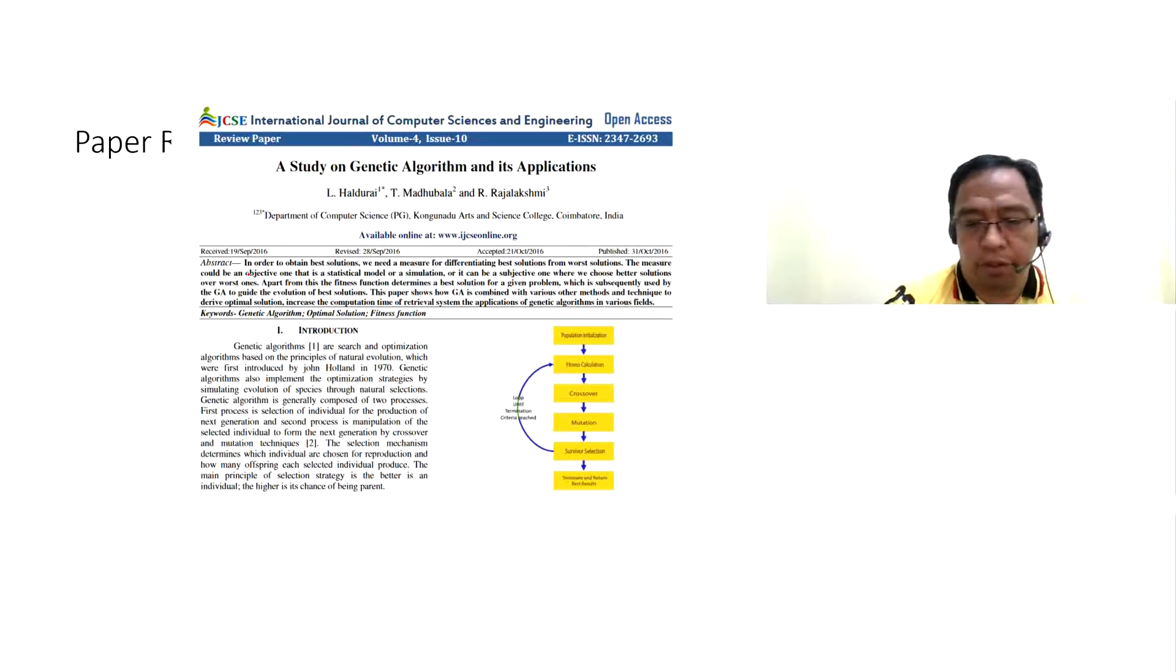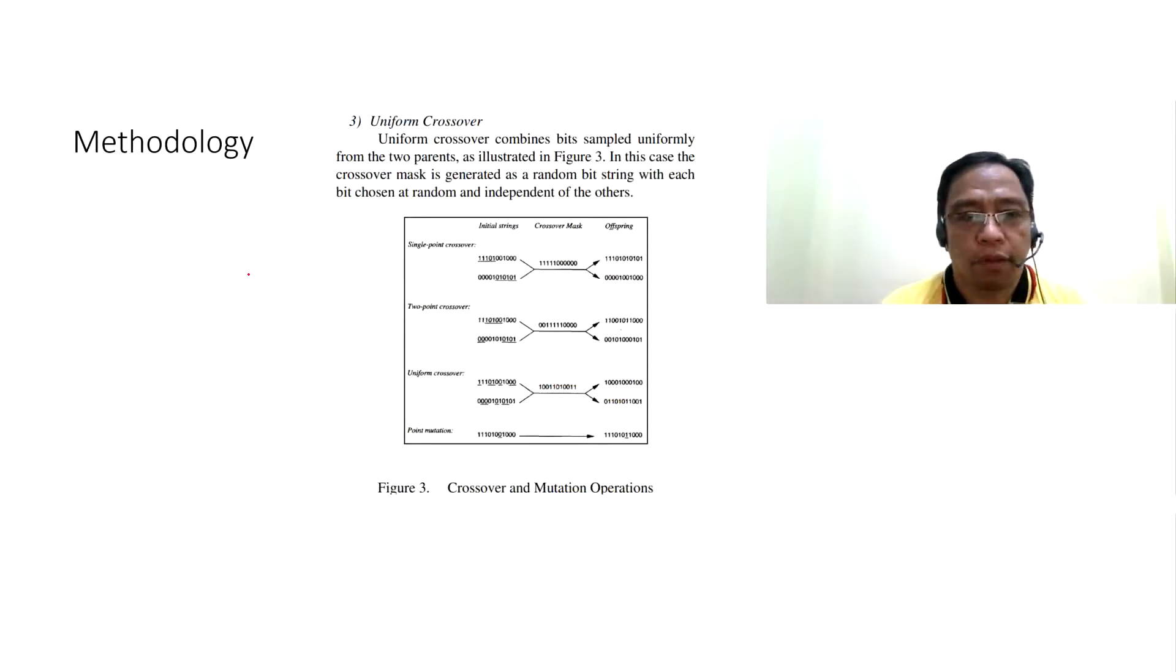For the methodology, a uniform crossover combines bits sampled uniformly from the two parents as illustrated in this figure or figure three. In this case, the crossover must generate a random bit string with each bit chosen at random and independent of the others. Two chromosomes randomly combined for the offspring or crossover. And then, this is the offspring or the child. Two point crossover. This is the result. And then, uniform crossover. And then, this is the result.